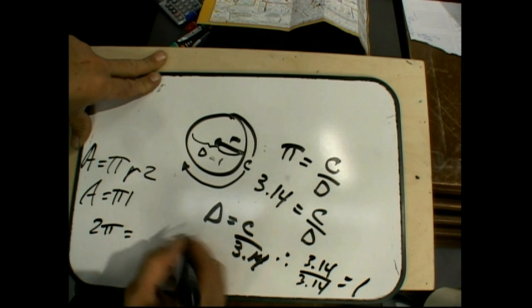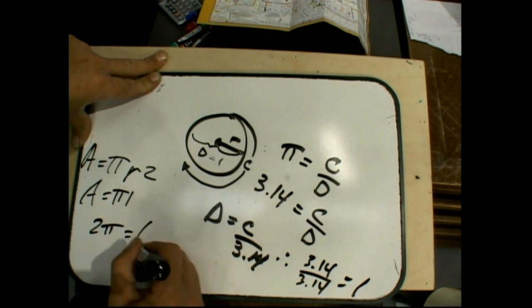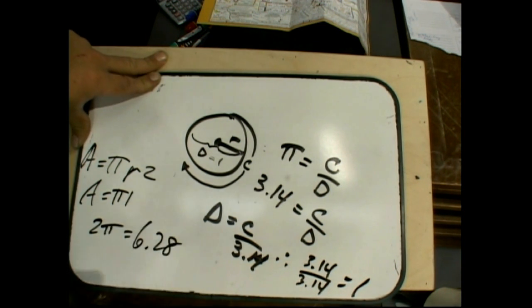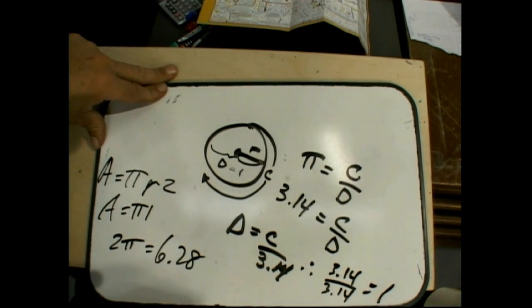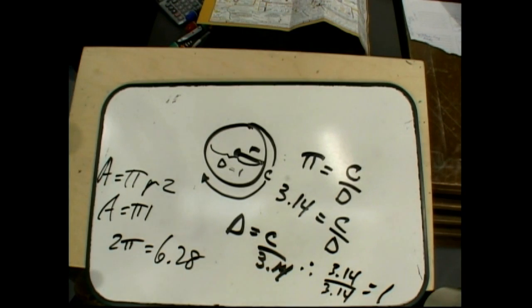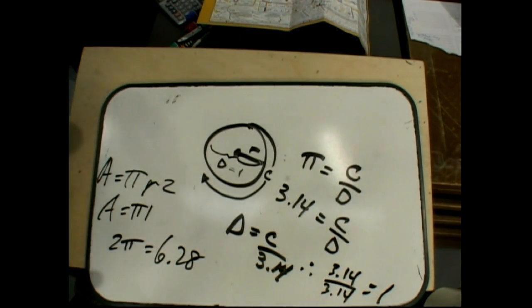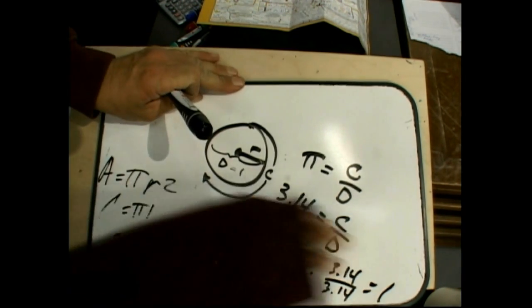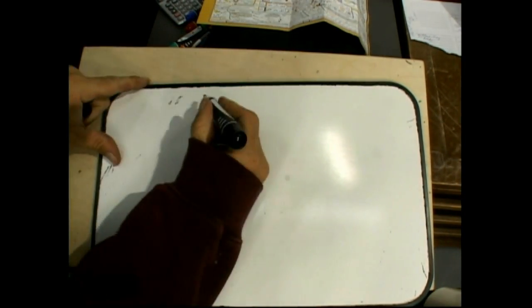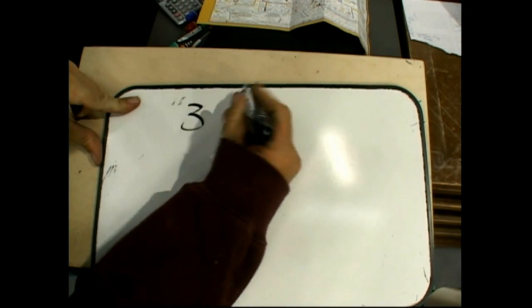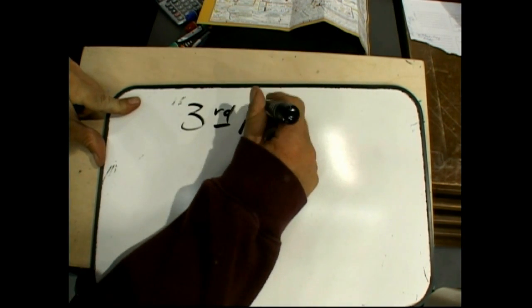What that is going to equal is 2 pi, 2 times 3.14 is going to be 6.28. So this is just messing around with pi. Area is the second dimension. Third dimension is going to be volume.